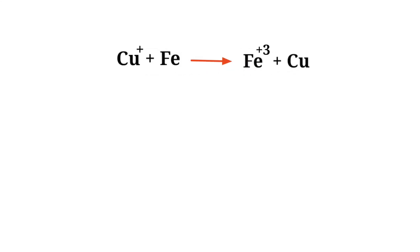Figure out the reducing and oxidizing agents by the rules of assigning oxidation numbers. In the ion electron method, one reaction is divided into 2 half reactions, which are then balanced separately and added together.